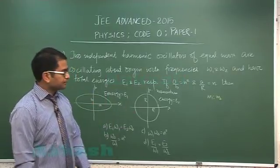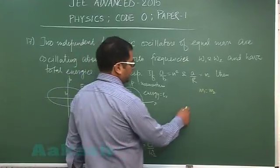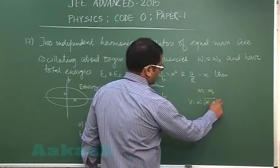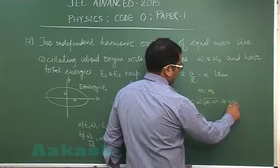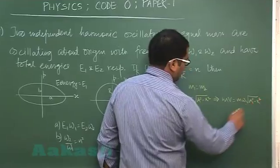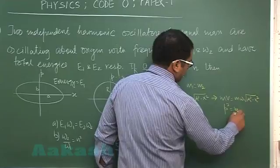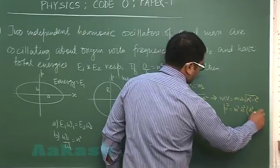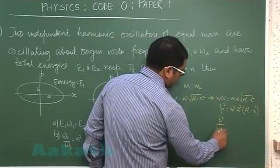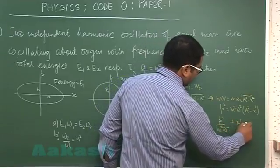First, let's see what is the relation between momentum and x. Velocity is omega root a square minus x square. This implies mv is m omega root a square minus x square, implying p square is m square omega square a square minus x square. So you get p square by m square omega square a square plus x square by a square would equal 1.